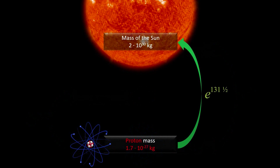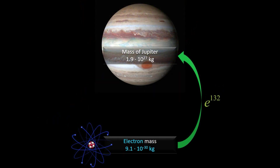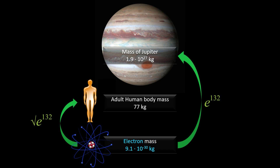The current mass of our Sun approximates the 131.5th power of Euler's number relative to the proton mass. Multiplying the proton mass by the square root of the 131.5th power of Euler's number, we get 60 kilogram — the statistically average adult human female body mass. The current mass of the planet Jupiter approximates the 132nd power of Euler's number relative to the electron mass. Multiplying the electron mass by the square root of the 132nd power of Euler's number, we get 77 kilogram — the average adult human male body mass.